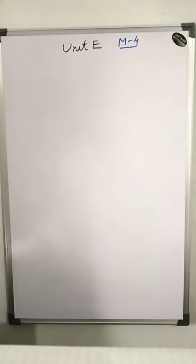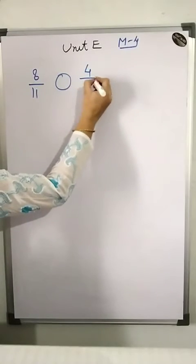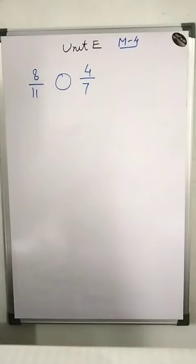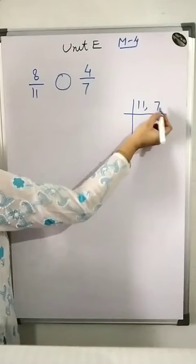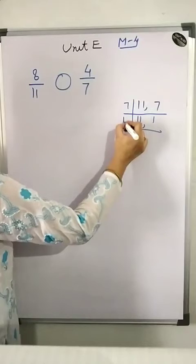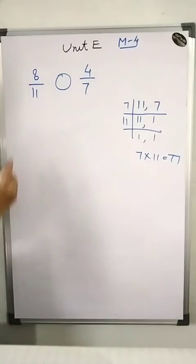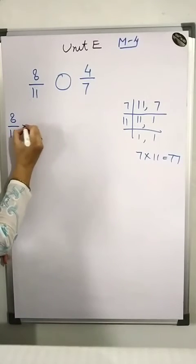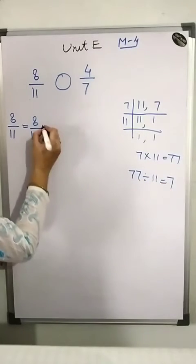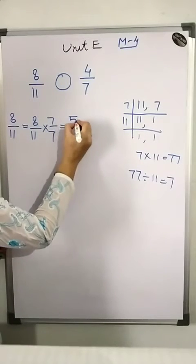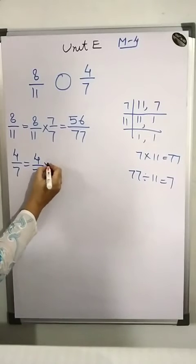Module 4: compare 8 upon 11 and 4 upon 7 by converting to like fractions. Since 11 and 7 are both prime numbers, the LCM is 7 × 11 = 77. For 8 upon 11: divide 77 by 11 to get 7, so multiply by 7 upon 7. This gives 56 upon 77.